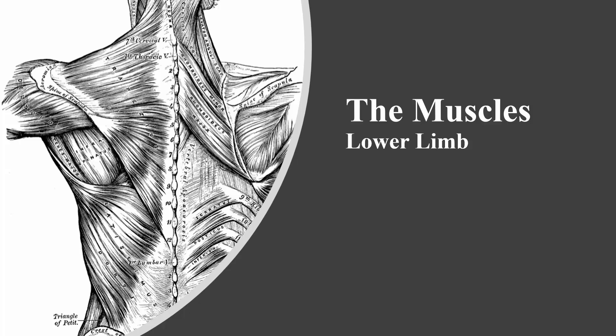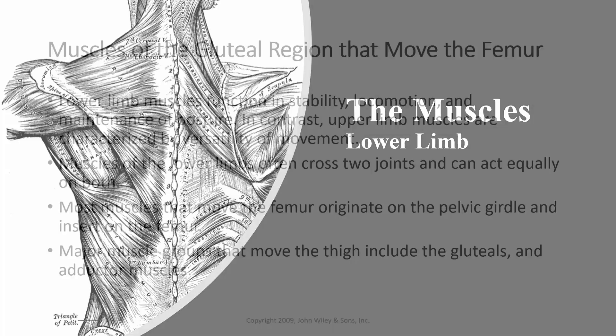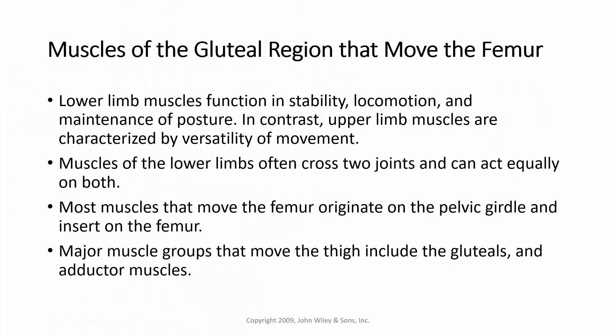In this lecture, we're going to cover the muscles of the lower limb, specifically muscles of the gluteal region that move the femur. Lower limb muscles function in stability, locomotion, and maintenance of posture. In contrast, upper limb muscles are characterized by versatility of movement. Muscles of the lower limb often cross two joints and can act equally on both. Most muscles that move the femur originate on the pelvic girdle and insert on the femur. The major muscle groups that move the thigh include the gluteals and adductor muscles.